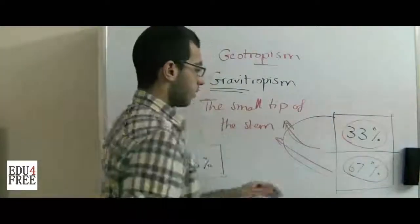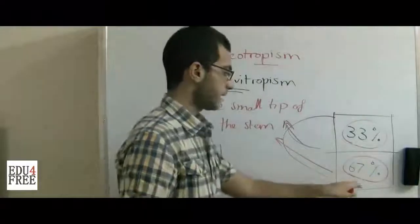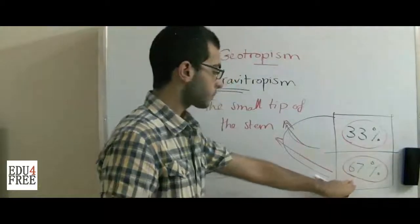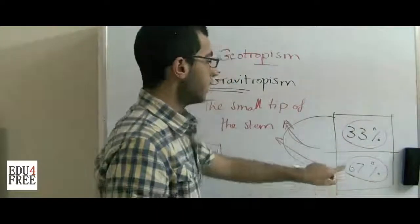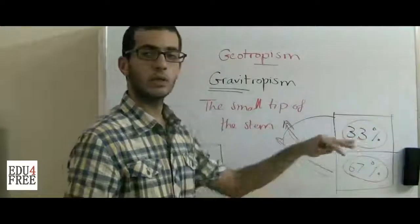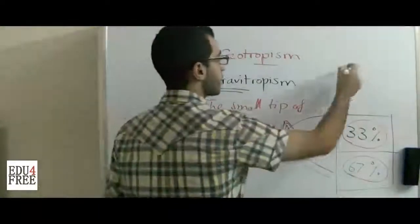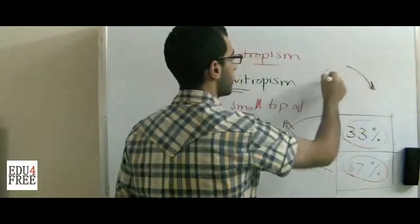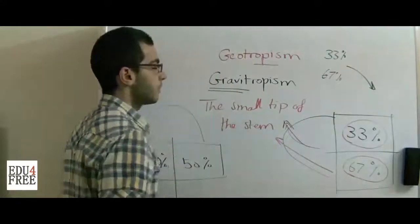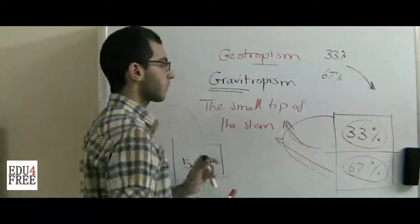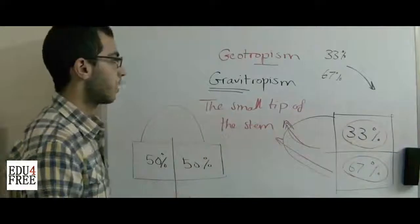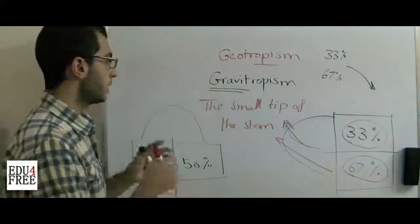The opposite effect occurs in the roots. At the part facing gravity, 67% of the auxins are present, but here the 67% diminishes the growth of that part, and the 33% induces the growth of the other part, so the curvature takes a downward shape. The root is positively geotropic because it grows in the direction where gravity acts.